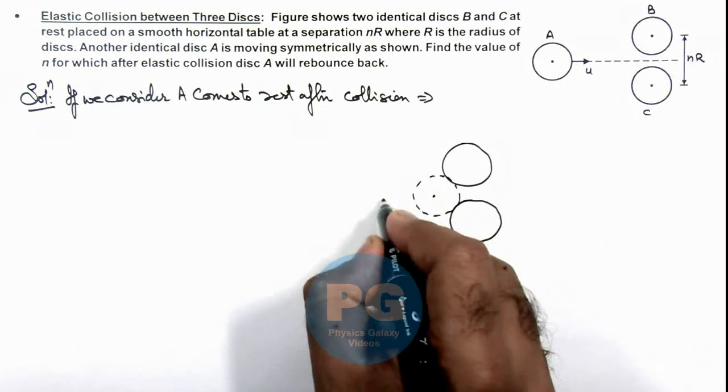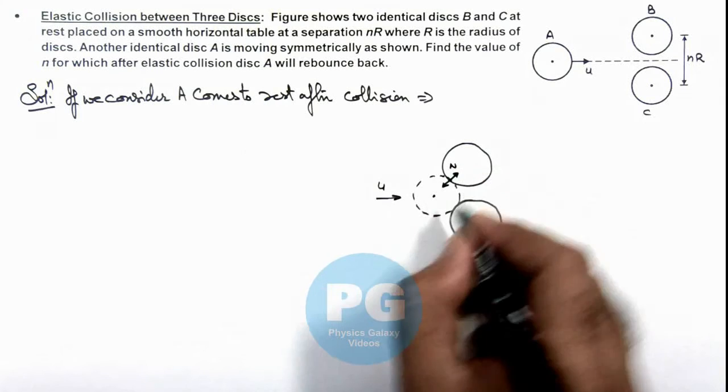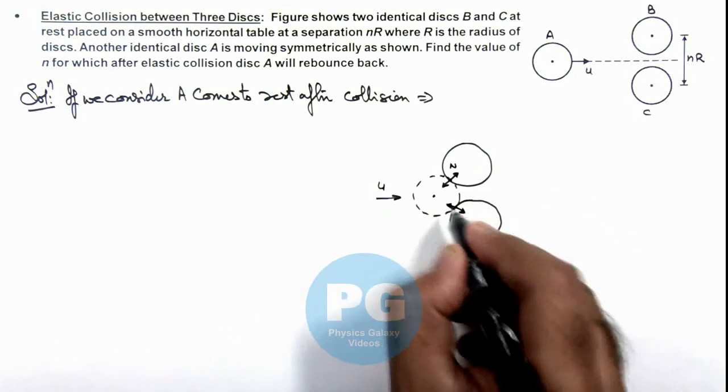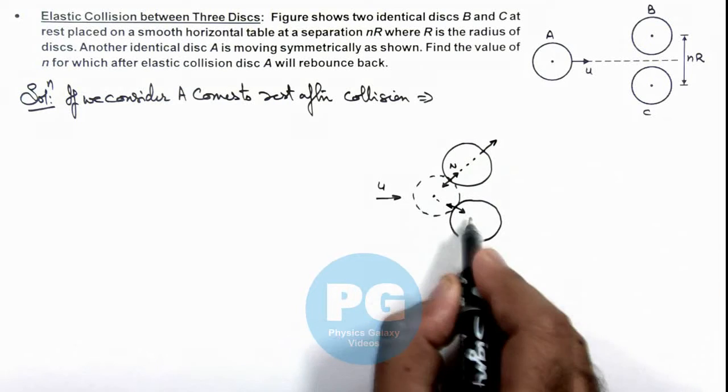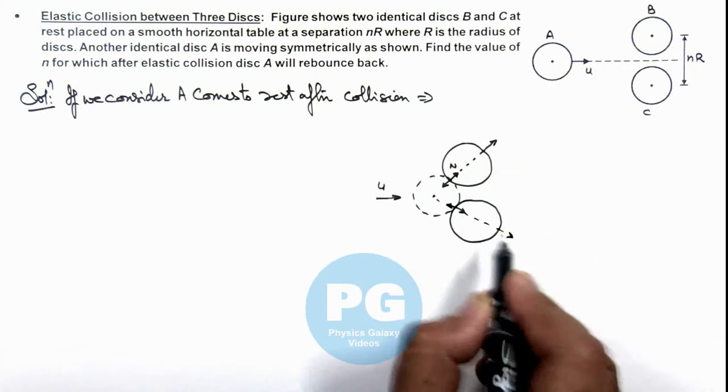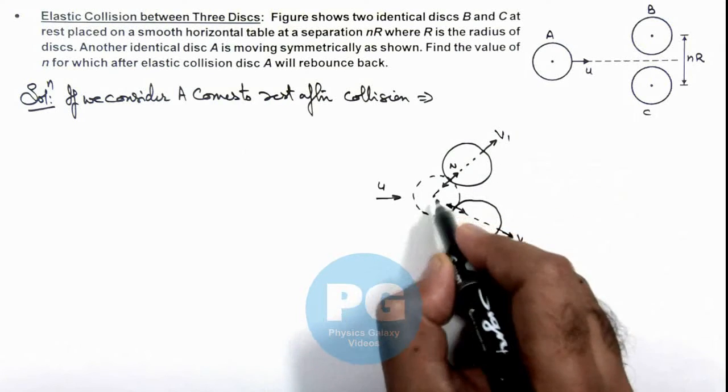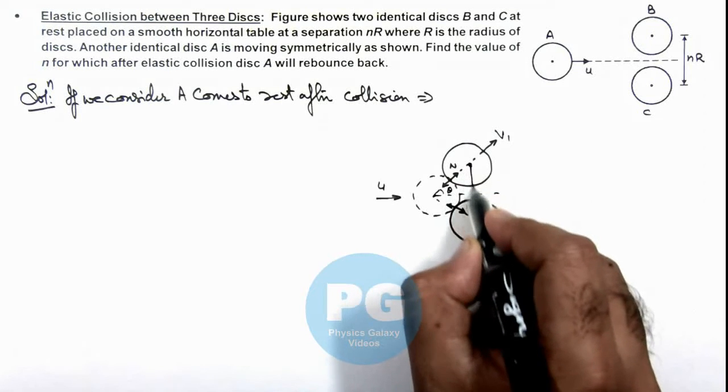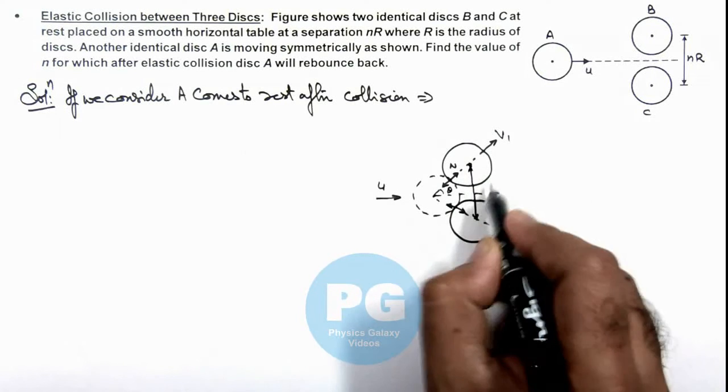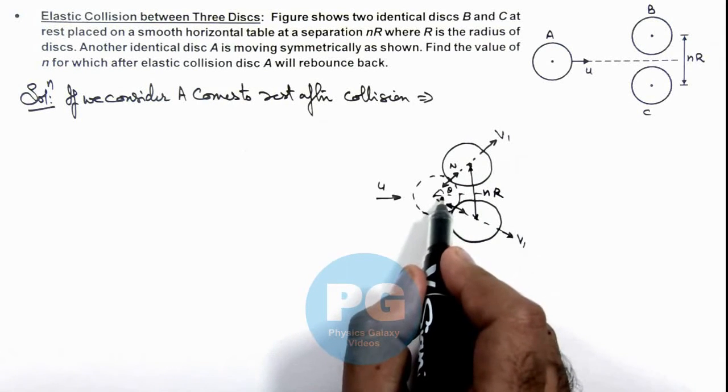A was moving at a speed u and the impulse will appear as normal reaction between these balls like this. And ball B and C will start moving in the direction of these impulses, say with the values v1 and v1. And say if this angle is theta, because we are given that the separation between the two balls is nR, so if this angle is theta, here we can write.